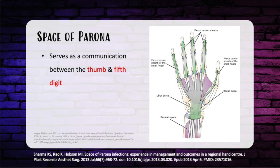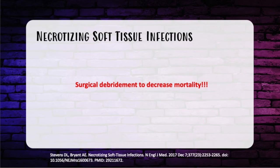The Space of Parona comes up on the exam from time to time. This space is important when you see flexor tenosynovitis involving both the small finger and the thumb — meaning the infection has spread to the Space of Parona, as it's the only area connecting an infection of the thumb and small finger. It is considered the upper extremity horseshoe abscess.